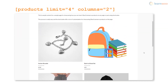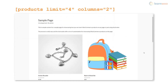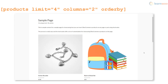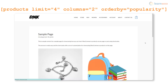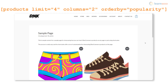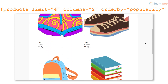By default, the products are sorted alphabetically. However, you can use the orderby attribute with its values like date, ID, popularity, and rating to choose a specific sorting parameter. For example, using the popularity attribute value will sort the displayed products according to the number of purchases.